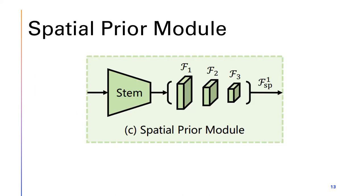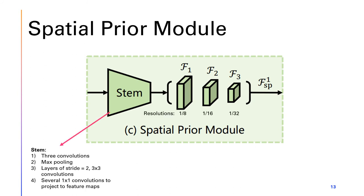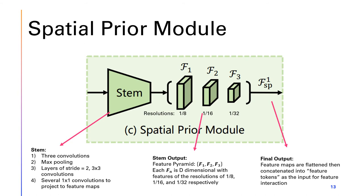Here is a closer look at the spatial prior module. Many recent studies show that CNNs can assist transformers in picking up on local features, since transformers tend to focus on more global features. The spatial prior module operates in parallel with the patch embedding layer of the VIT, so this does not change the architecture of the Vision Transformer. The stem was borrowed from ResNet and consists of three convolution layers and a max pooling layer, followed by a stack of stride-2 3x3 convolutions, finally finishing with several 1x1 convolutions to project the feature maps into d dimensions, resulting in a feature pyramid of three different resolutions. This feature pyramid is then flattened into feature tokens.